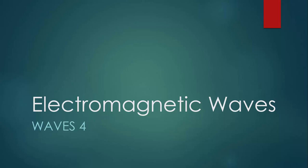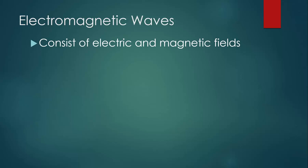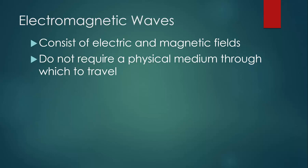This lesson is about electromagnetic waves. Electromagnetic waves consist of electric and magnetic fields. They do not require a physical medium through which to travel. This means that they can travel through a vacuum.